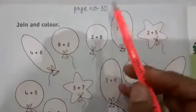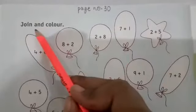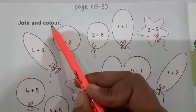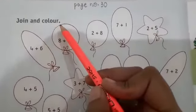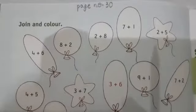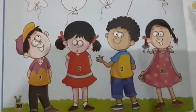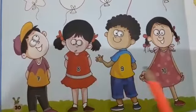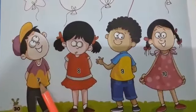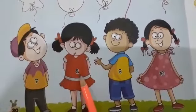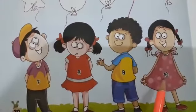On page number 30, what do you have to do? Join and color. You have to join and then fill color. Look here, you're given many balloons. You're given pictures of kids. On these t-shirts on top, numbers are written: seven, eight, nine, and ten.